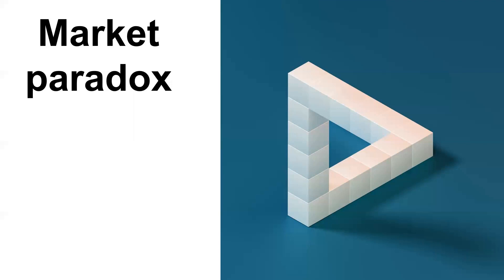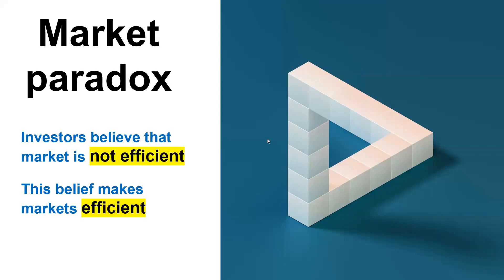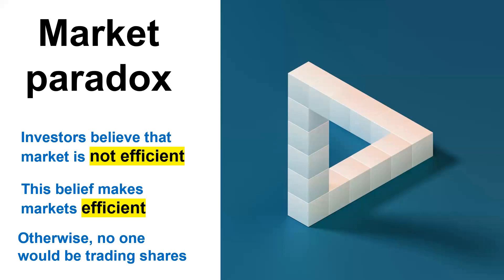Investors tend to believe that the market is not efficient, so they try to achieve some abnormal gain by trading — buying or selling shares — because they believe they are more clever than the market. If investors did not have this belief, the market would collapse, because if you know you cannot win, why would you ever play? This belief actually makes markets efficient, as the market tries to adapt to investors' beliefs and becomes more efficient. So markets are getting more efficient, yet investors keep thinking the market is not efficient — what a paradox!